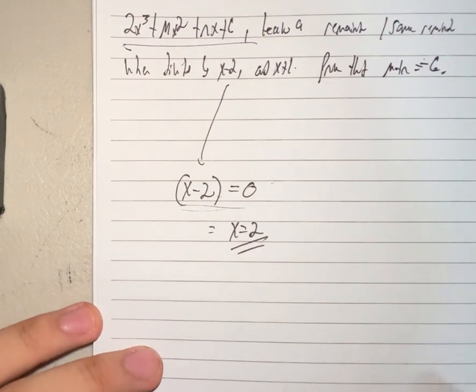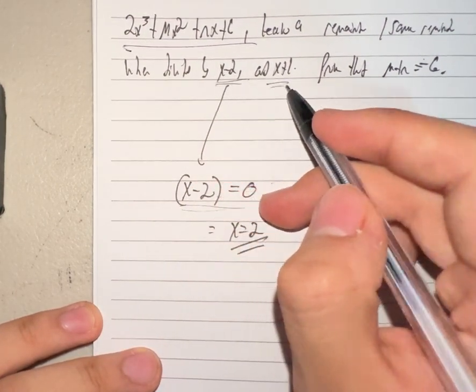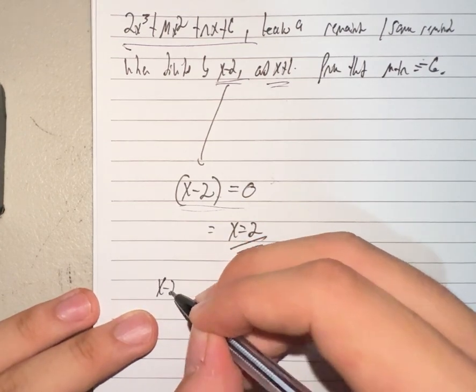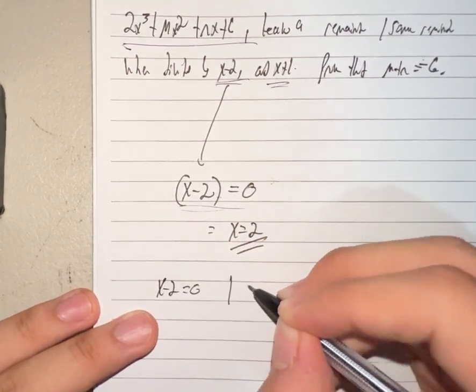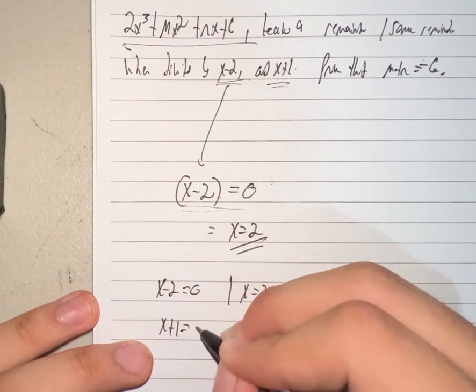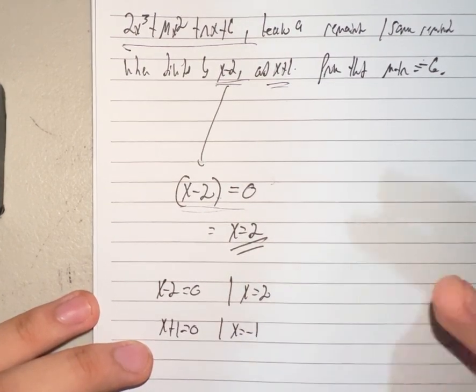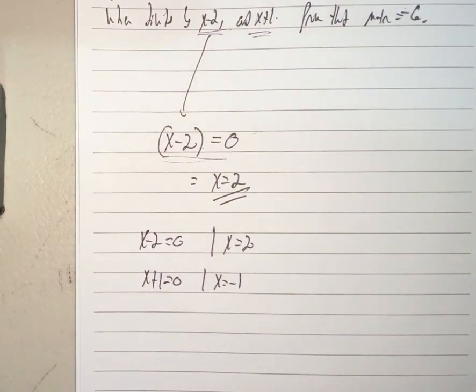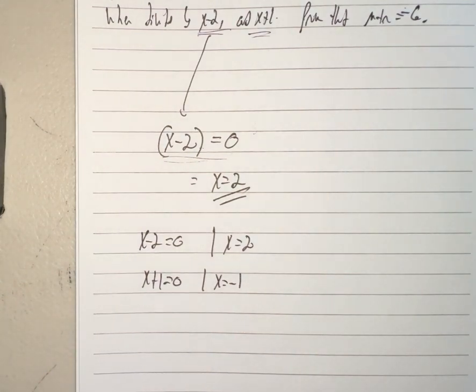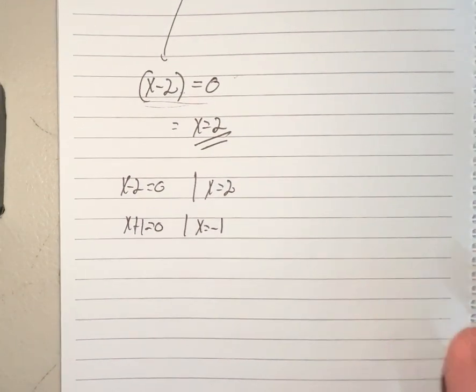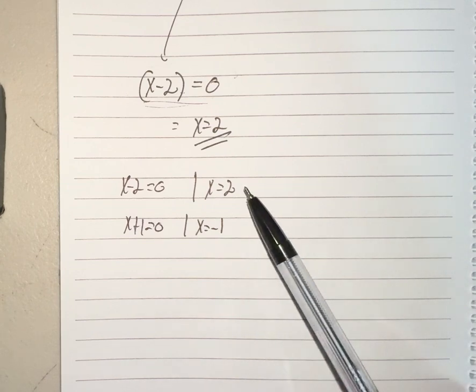So in that case, let's solve for the zeros of each first. x minus 2 equals 0, x equals 2. x plus 1 equals 0, x equals negative 1. Now, it's stated that they both have the same remainder. This is important. They both have the same remainder if we substituted each of these here.